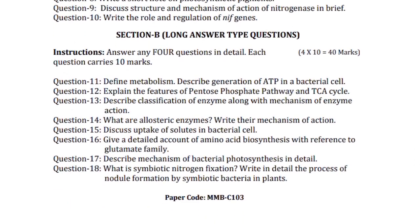Section B is of long answer type questions. There are total eight questions in this section and you have to attempt only four questions. Each question carries 10 marks. Question 11: Define metabolism and describe generation of ATP in bacterial cell. Question 12: Explain the features of the pentose phosphate pathway and TCA cycle.